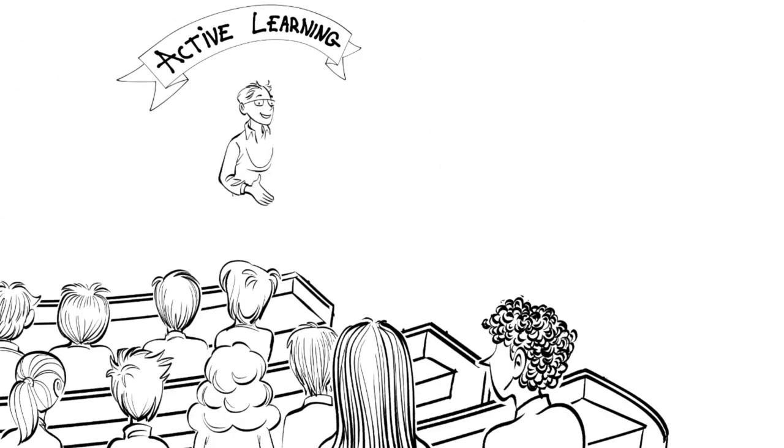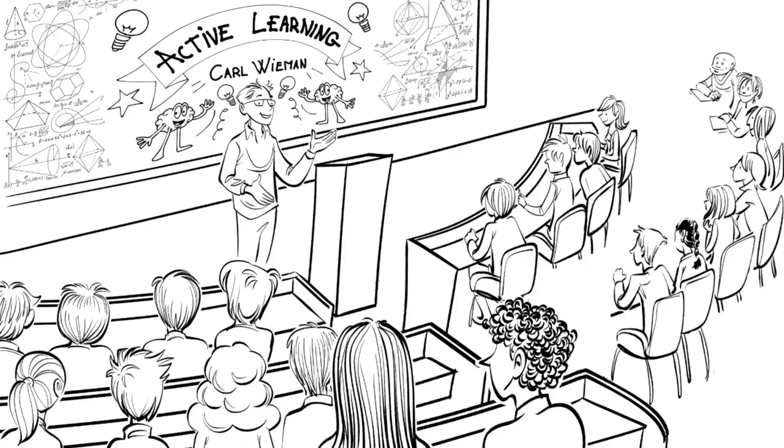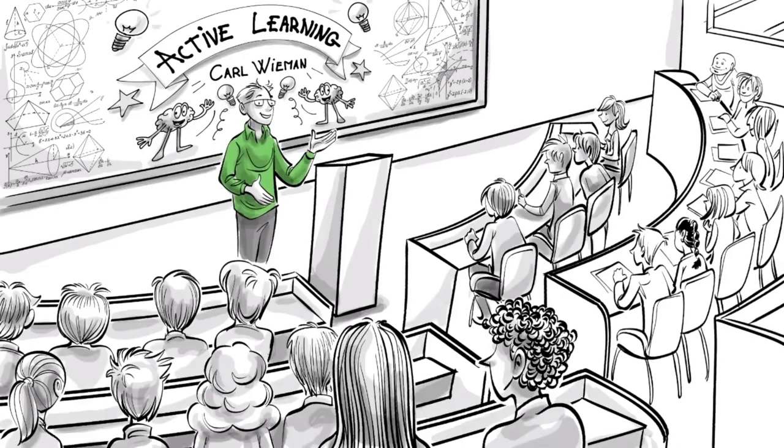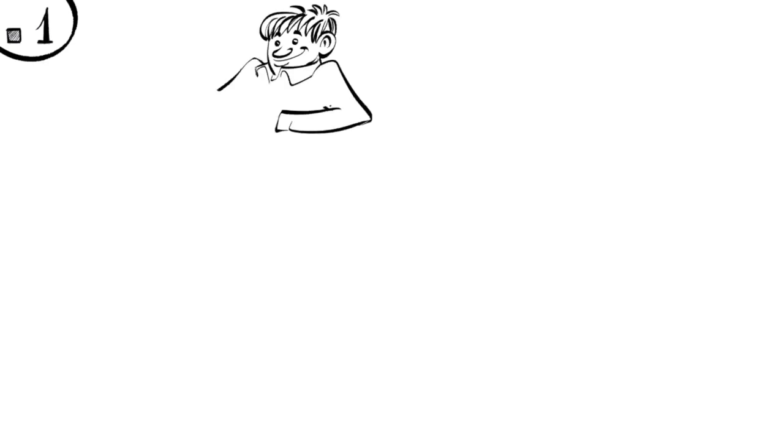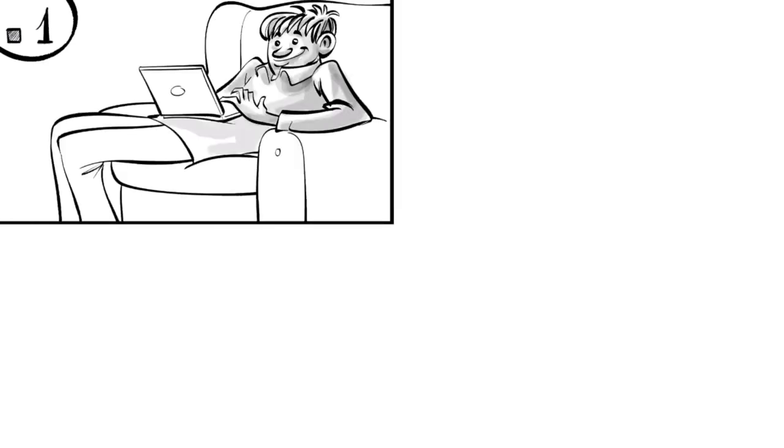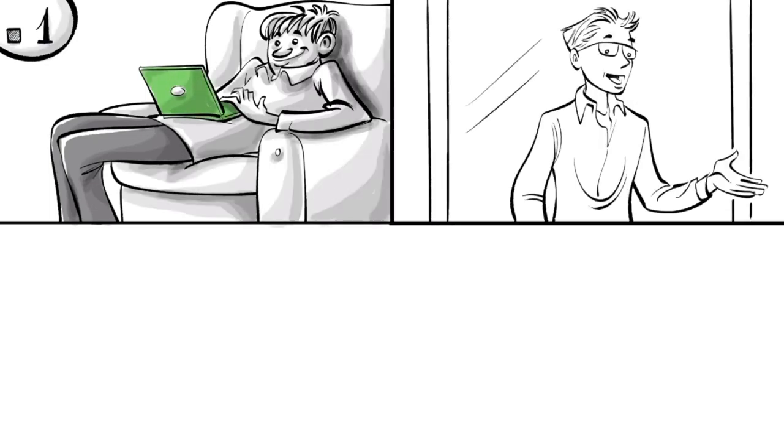To understand how active learning is applied in classrooms, let's look at the teachings of Professor Carl Wyman, a Nobel Prize winning physicist and a leading proponent of the method. There are four steps to it. Step 1. Prior to class, the students read up on the fundamentals of a lesson so they get an idea of the terms and basic phenomena. In class, Professor Wyman starts with a brief introduction and then gives questions to solve.